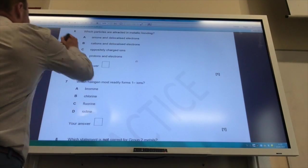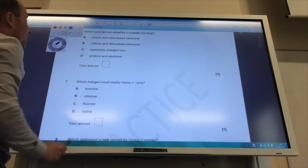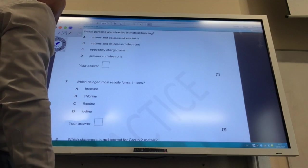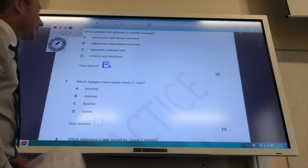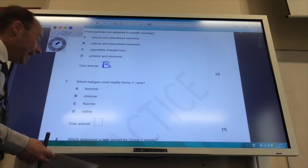Question 6. Which particles are attracted in metallic bonding? Metallic bonding, you need to know this one, is of course B, cations and delocalised electrons.